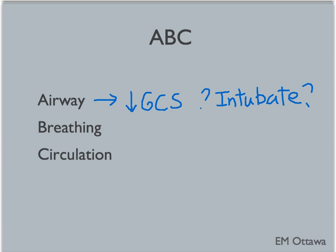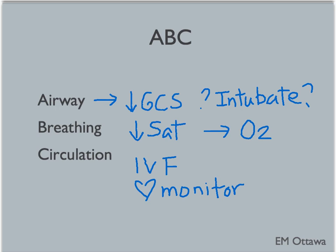Two, breathing. We need to ensure the patient is ventilating and oxygenating properly. If the patient is hypoxic, we will give them supplemental oxygen. Three, circulation. We give fluids to ensure their circulation and end organ perfusion is adequate. We also put patients on a cardiac monitor since different toxins can cause bradycardia, tachycardia or arrhythmias. An ECG should also be done.